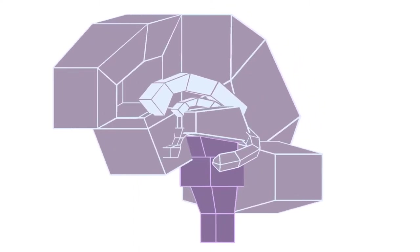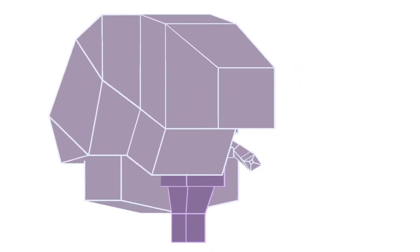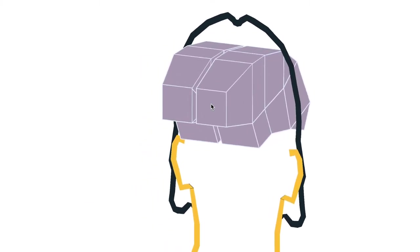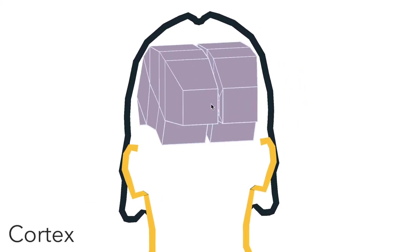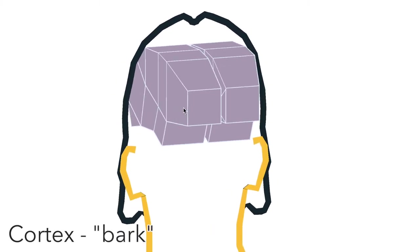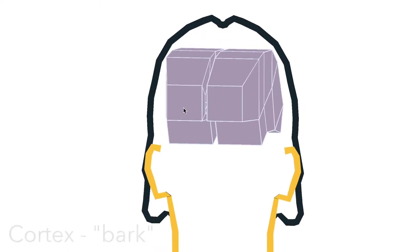We'll be using this simplified geometric model. And the first thing we see on the outside of the brain is the cortex. In Latin, this means bark, like the bark of a tree, because it is the rough outer surface of the brain.